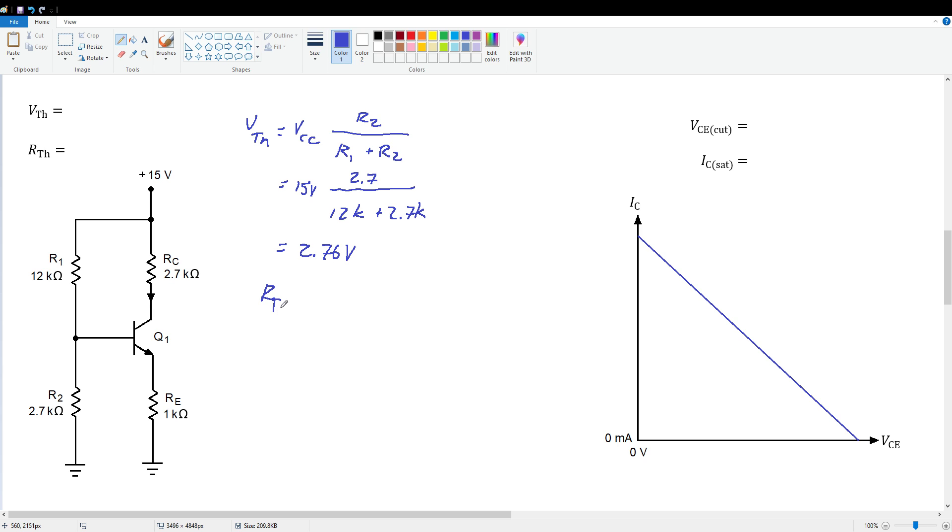Our RTH value is R1 in parallel with R2. So that's 12K in parallel with 2.7K, which works out to be about 2.2K ohms. So here are our Thevenin values, 2.76 volts and RTH is 2.2K ohms.